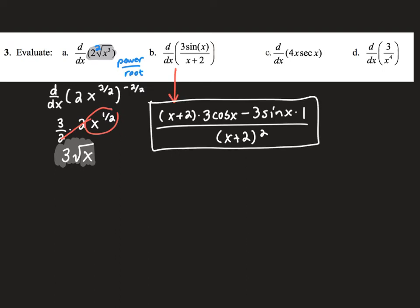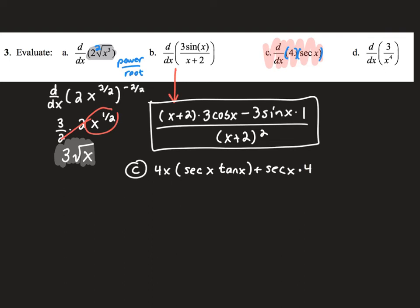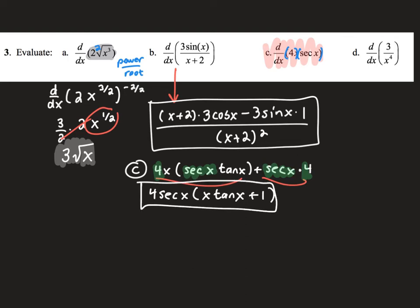For part C, I can see that I have a product — 4x is the first function and secant x is the second — so I'll apply the product rule. The product rule is the first times the derivative of the second: the derivative of secant x is secant x tangent x, plus the second function as is times the derivative of 4x, which is just 4. Both terms share a factor of 4 and secant x, so I can factor out 4 secant x. That factored form is my answer, though you'd really only do that factoring if you didn't see the original form among multiple choice options.